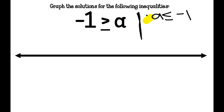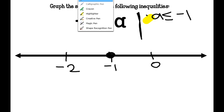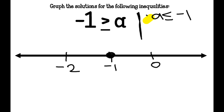I need three numbers on my graph: negative 2, negative 1, and 0. This will be a closed circle on negative 1 because negative 1 is included in the answer set — it's A is less than or equal to negative 1, meaning anything less than or equal to negative 1. I shade in those answers to the left.